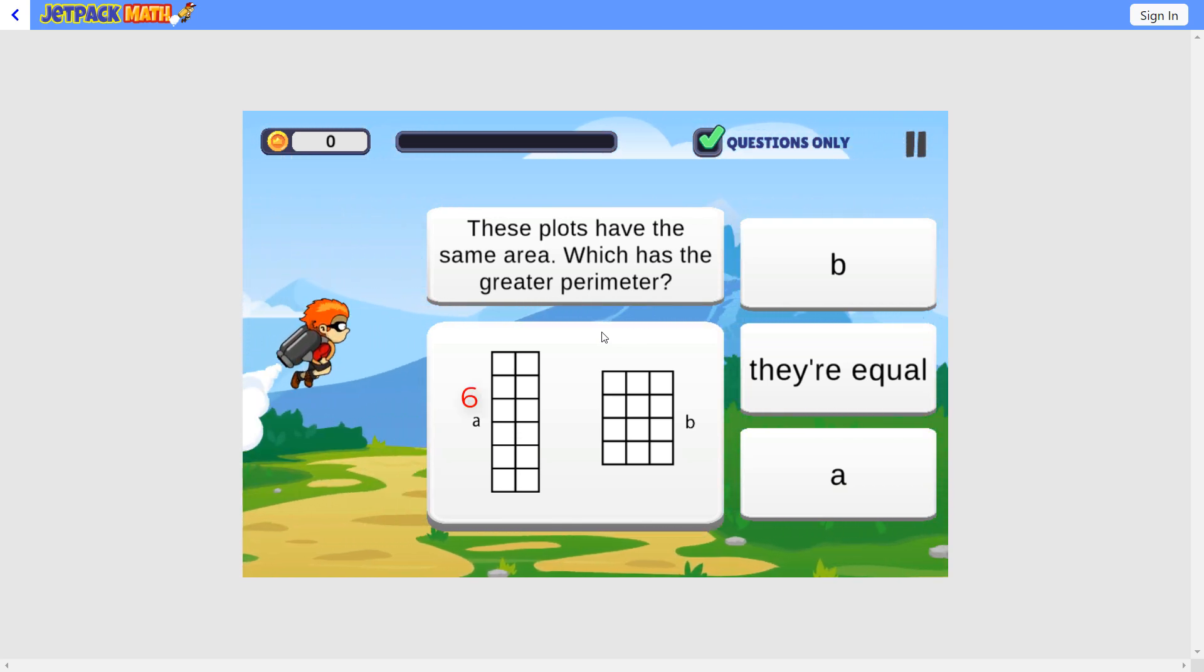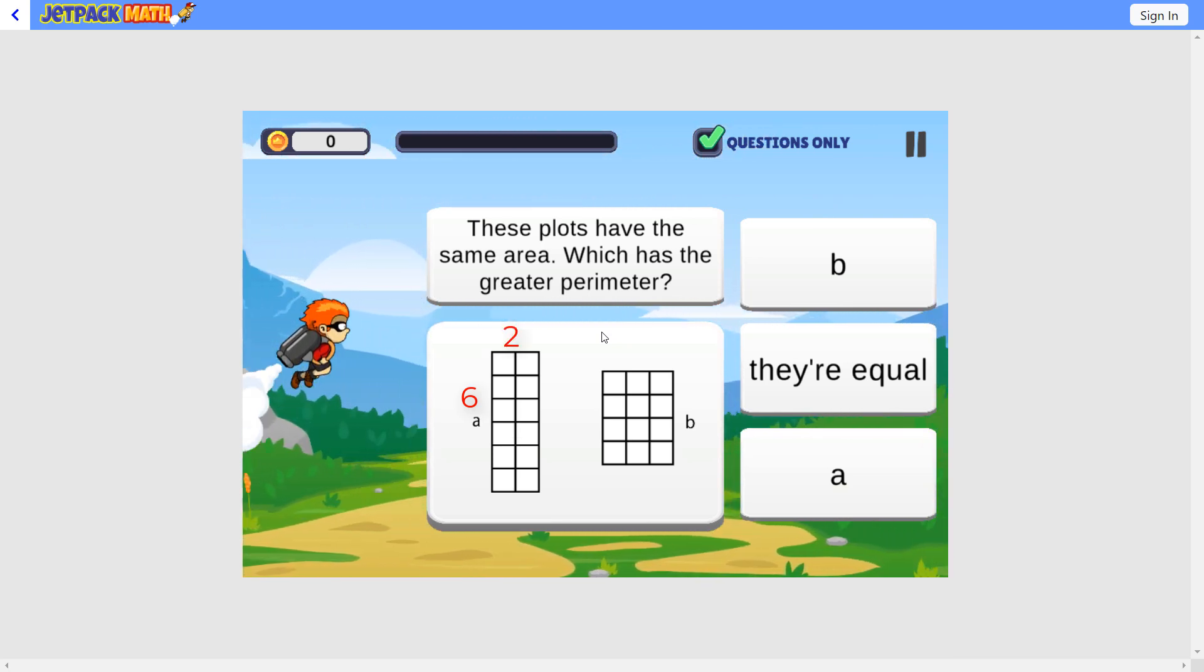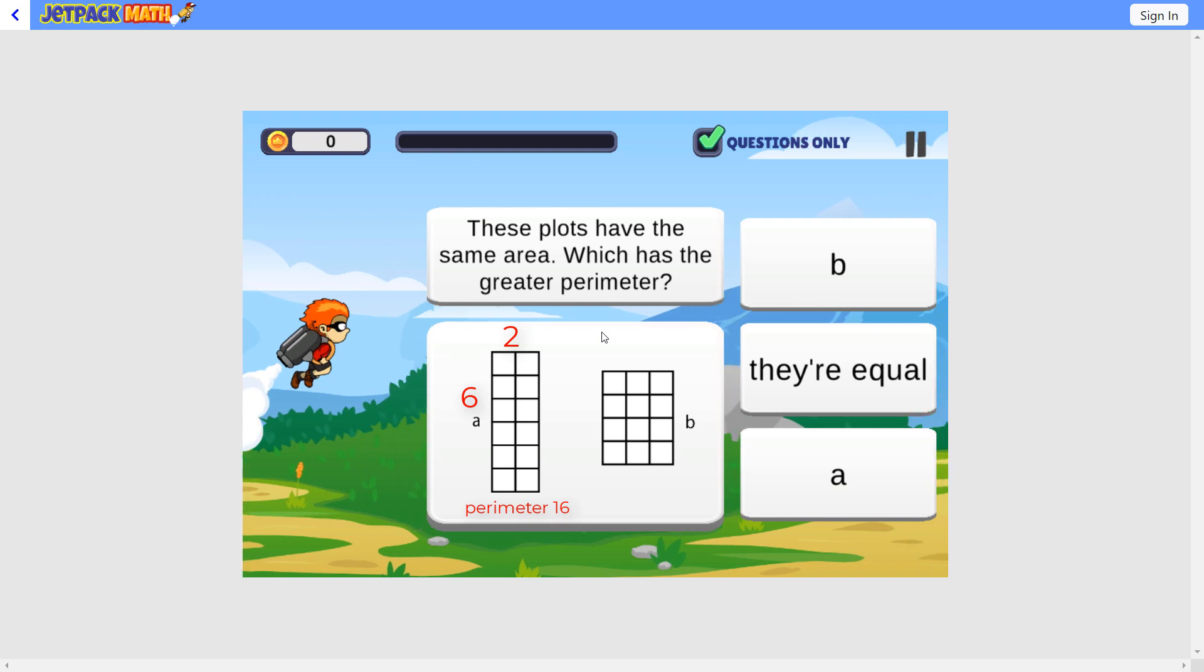Here we have 6 plus 2 is 8. 8 times 2 is 16. So the perimeter on A is 16.